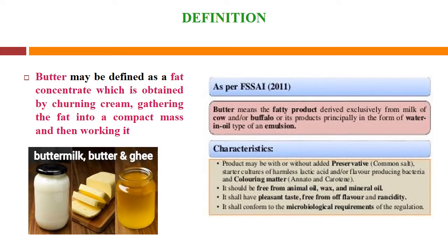Here we will see the definition of butter. Butter may be defined as a fat concentrate which is obtained by churning cream, gathering the fat into a compact mass and then working it. As per FSSAI 2011 — the Food Safety and Standards Authority of India — butter means the fatty product derived exclusively from milk of cow and/or buffalo or its products, principally in the form of a water-in-oil type of emulsion.